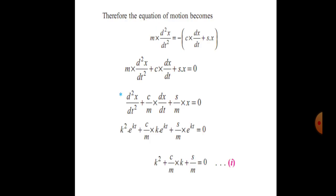Now the equation of motion becomes: m times d²x/dt² is equal to minus c times dx/dt plus s times x. From the forces acting on the system, after putting all values, we get: d²x/dt² plus c/m times dx/dt plus s/m times x equals zero.